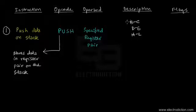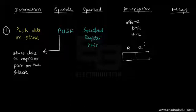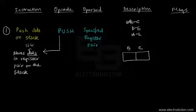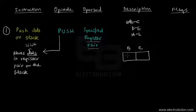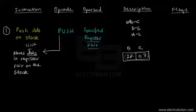Let's take the BC register pair and demonstrate an example. We're talking about the BC register pair, so keep in mind that this data is 16-bit because we're dealing with register pairs, not a single register. Let's say the BC register pair has the 16-bit data 2F03H, and we want to store this 16-bit data from the BC register pair onto the stack.